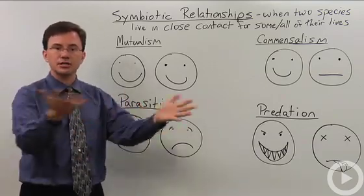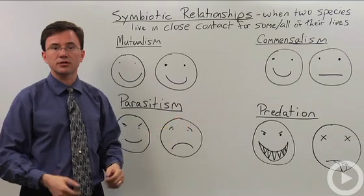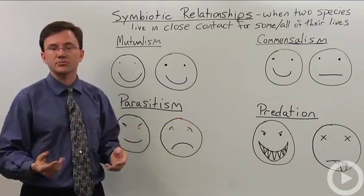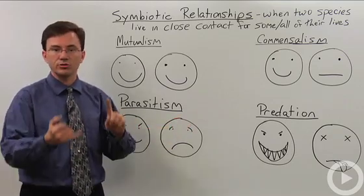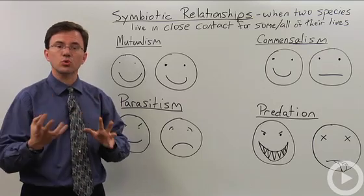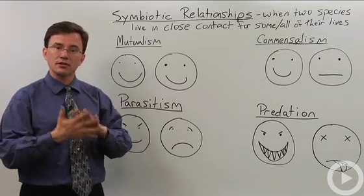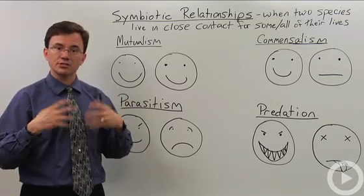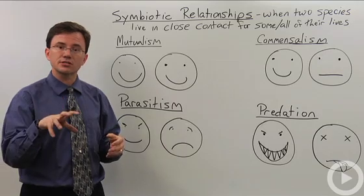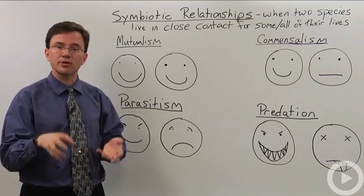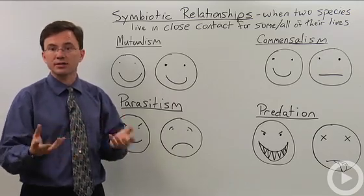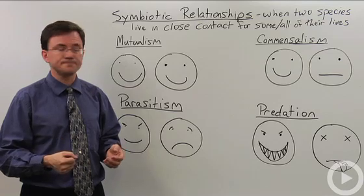Another common example of mutualism is lichen, where a fungus and an algae work together. The algae provides glucose from photosynthesis, while the fungus provides water and minerals broken down from rock for the algae.